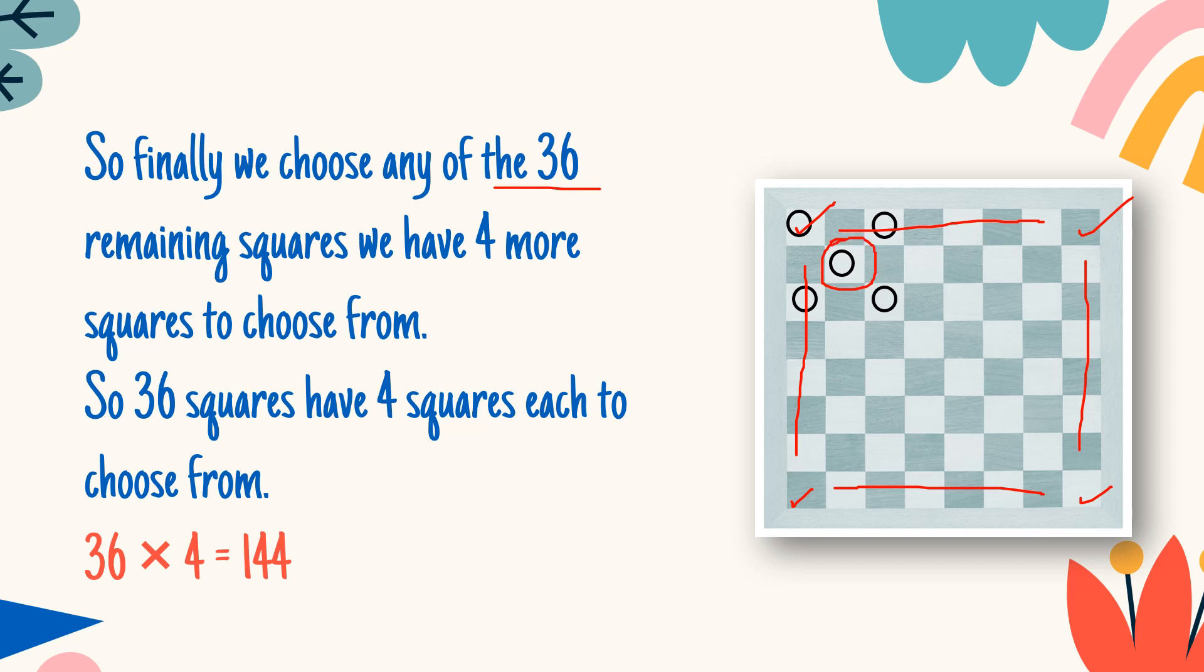Now you can clearly see that it shares a common vertex with 4 squares: 1, 2, 3, and 4. So every one of these 36 squares will be sharing the vertex with 4 squares. So 36 squares multiplied by 4 squares each will give you 144.